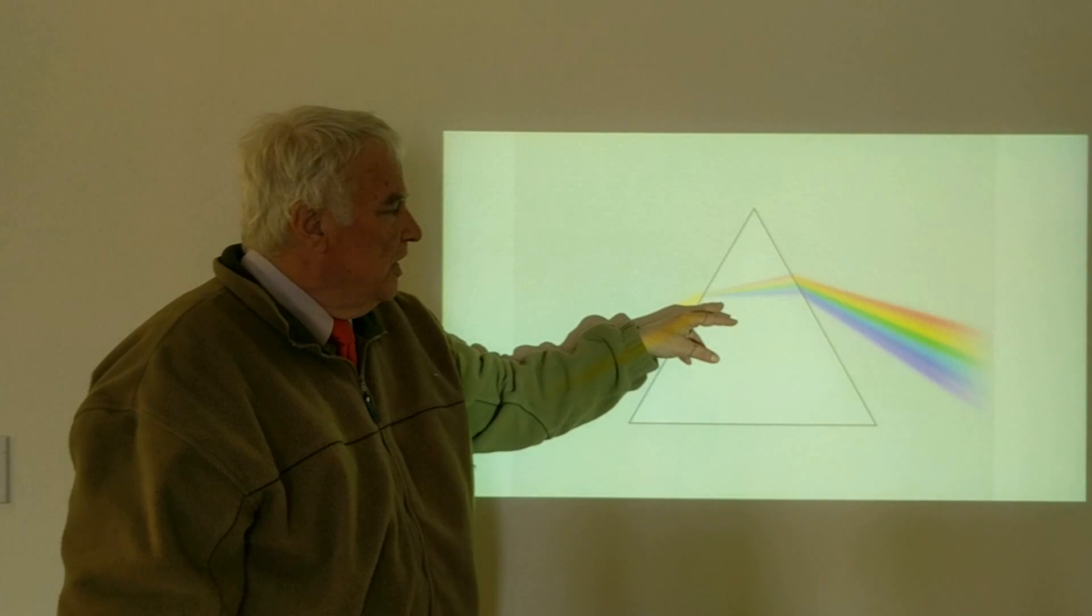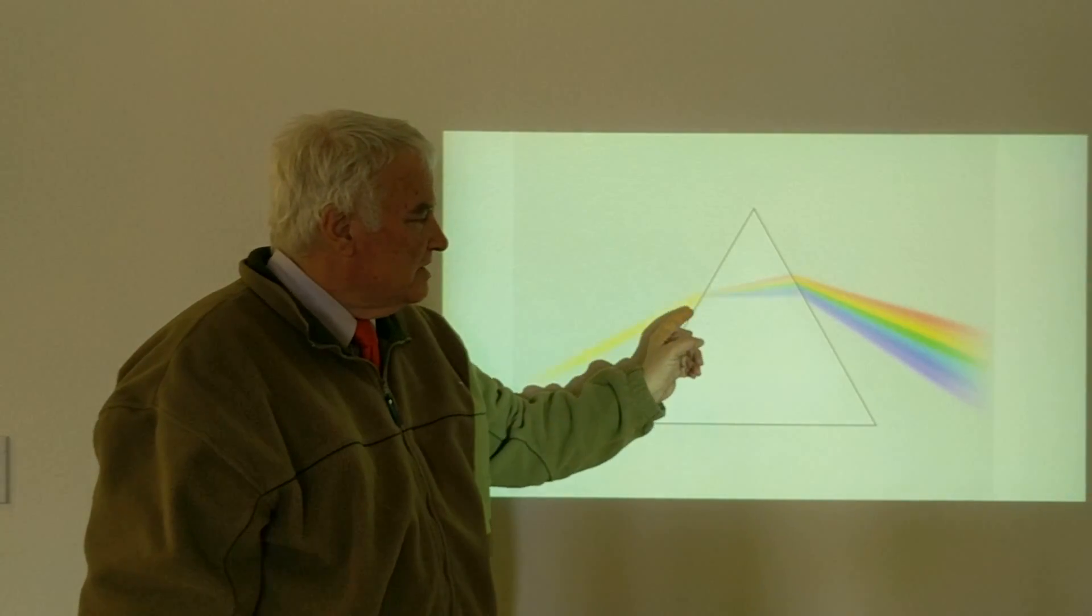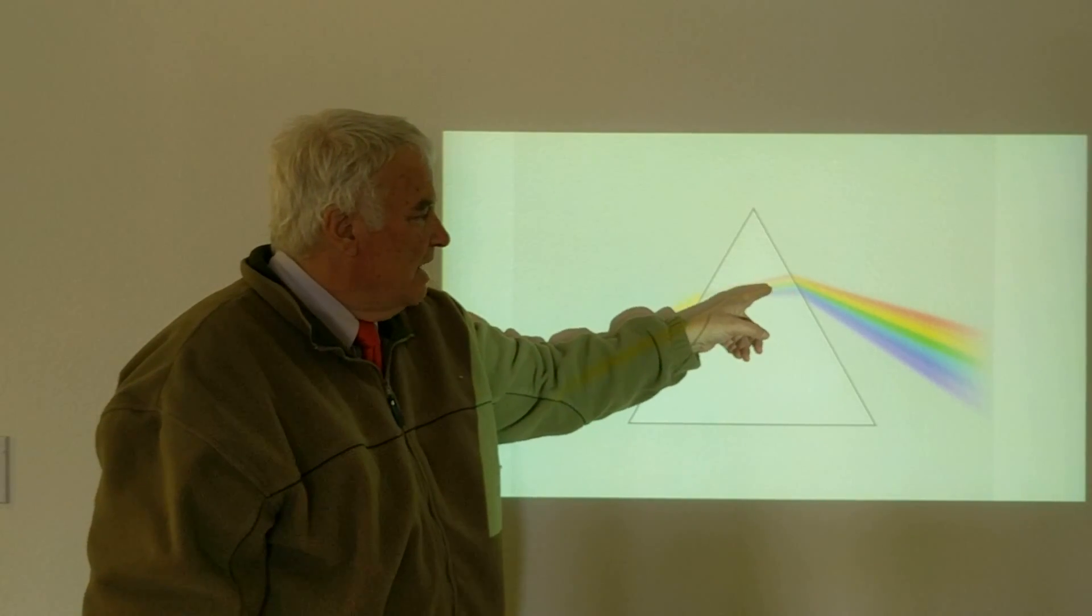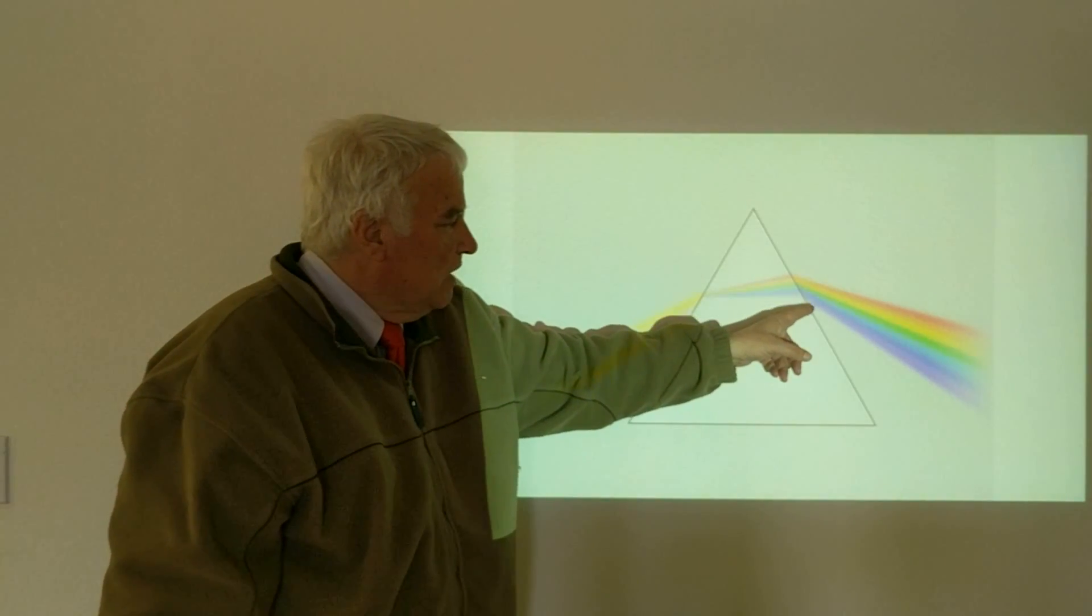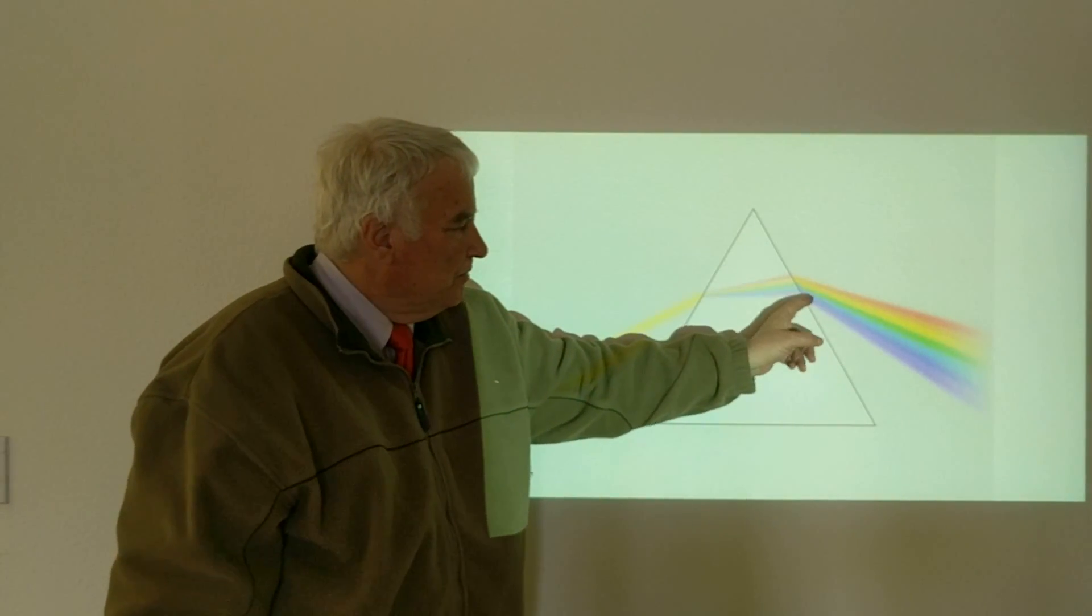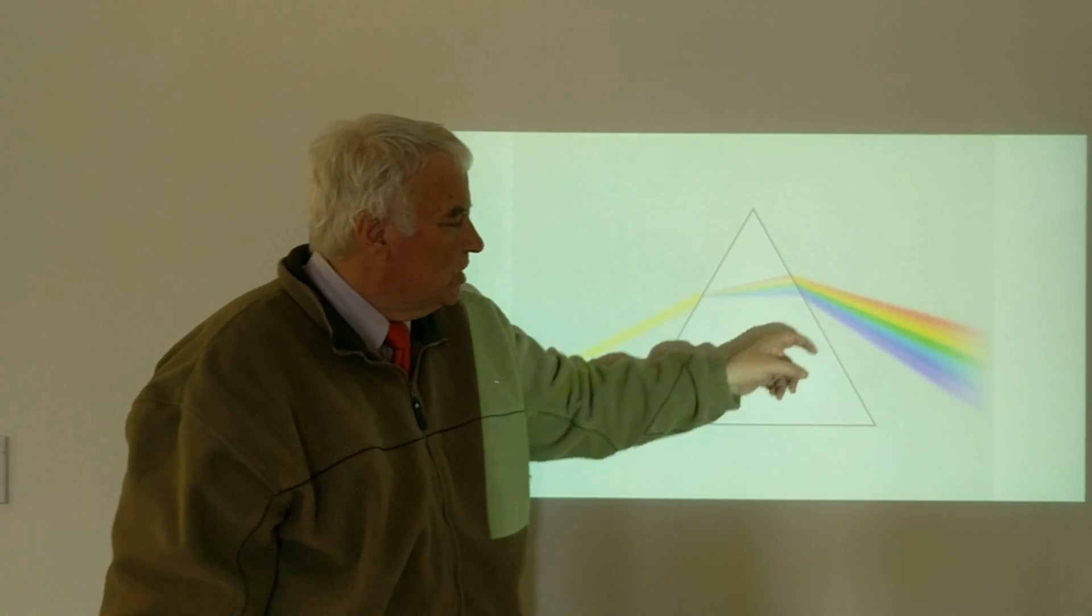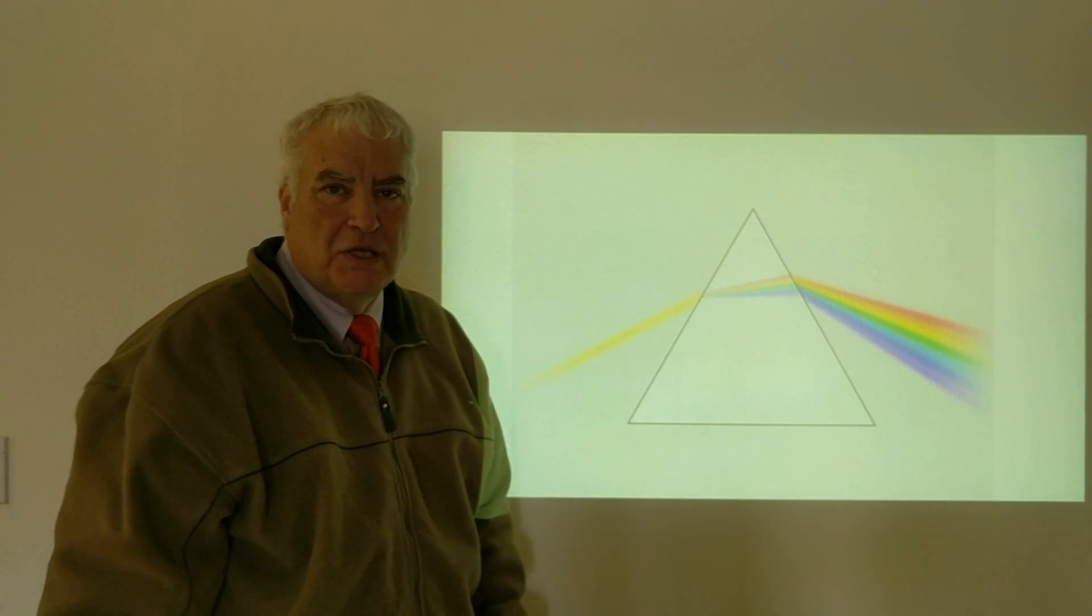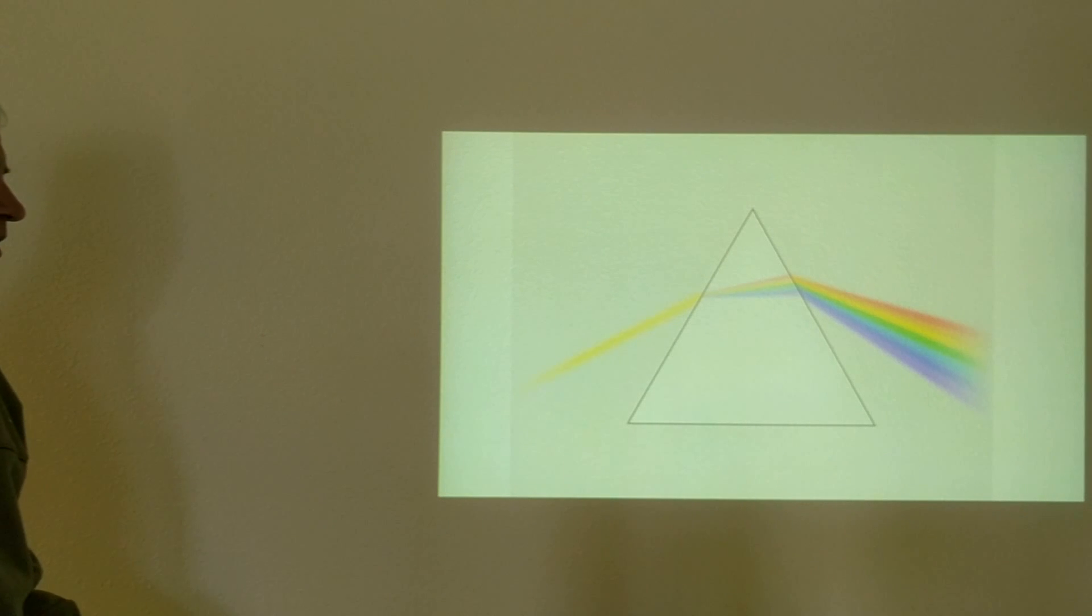The yellow light is bent less, and the red light is bent the least. Because of that bending, the different colors come out in different directions and we see the rainbow of colors, which is known as the spectrum of visible light. But this doesn't pertain just to visible light—it pertains to the full electromagnetic spectrum.